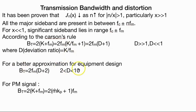For a better approximation for equipment design, BT equals 2Fm(D plus 2), where 2 less than D less than 10. For PM signal, BT equals 2(K plus Fm) equals 2(mKp plus 1)Fm.